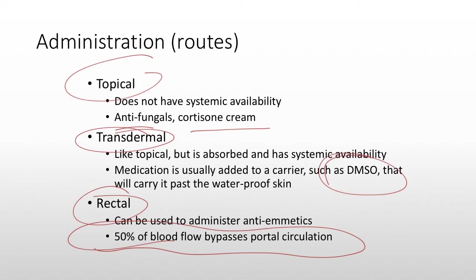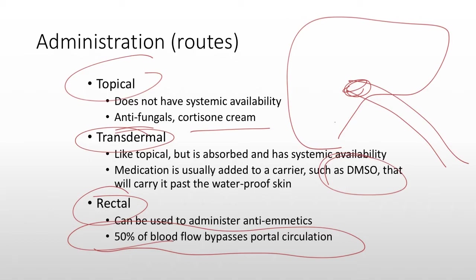First-pass metabolism basically means that most of the blood flow from your stomach and from your intestines is going to go straight to your liver. The liver's job is to detoxify the body, so it's going to see those medications and do its best to turn them off. So if you give a 200 milligram dose of a medication, your body might only see 50 milligrams of it. All of that's calculated into the dosing, but you have to be aware that you're going to have a larger systemic dose if you're bypassing that first-pass metabolism.